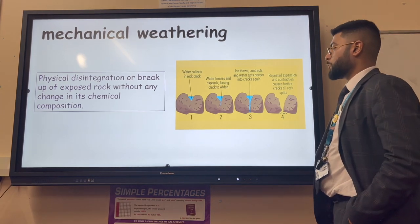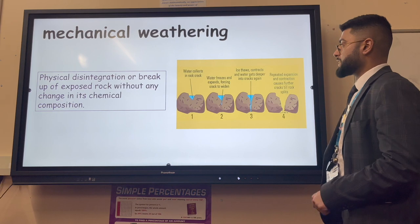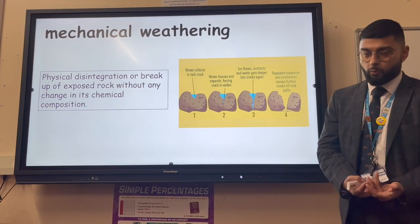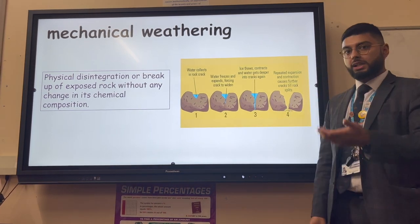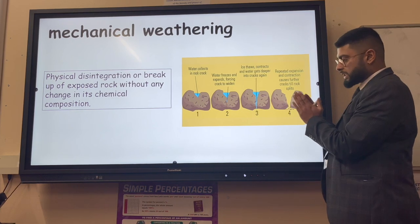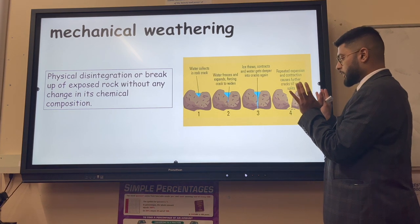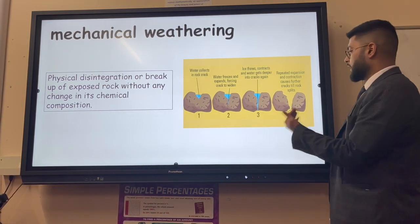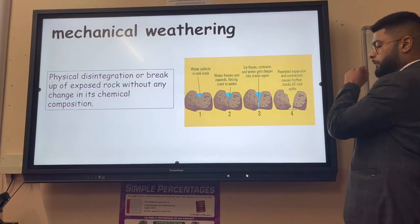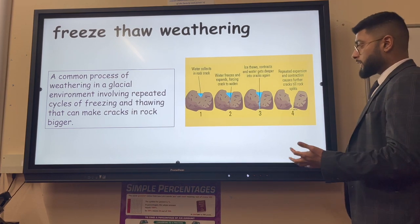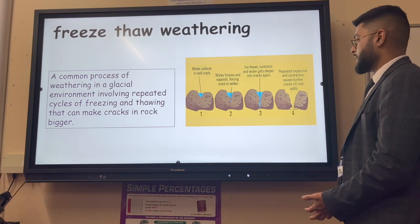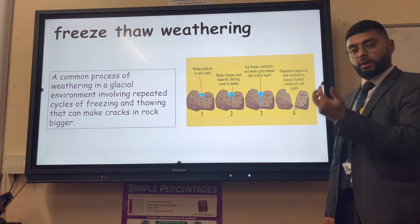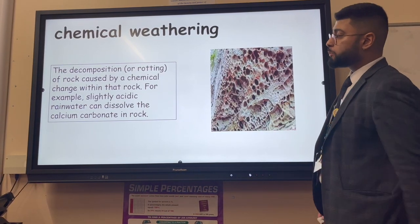An example of mechanical weathering is freeze-thaw weathering. Water in cracks in rocks freezes overnight due to diurnal temperature variation - warm in the day, cold at night. When it freezes it expands around 15%, opening the crack slightly. In the day the water melts, the crack stays slightly wider and fills with more water. This process keeps repeating until the rock completely disintegrates, leaving scree.